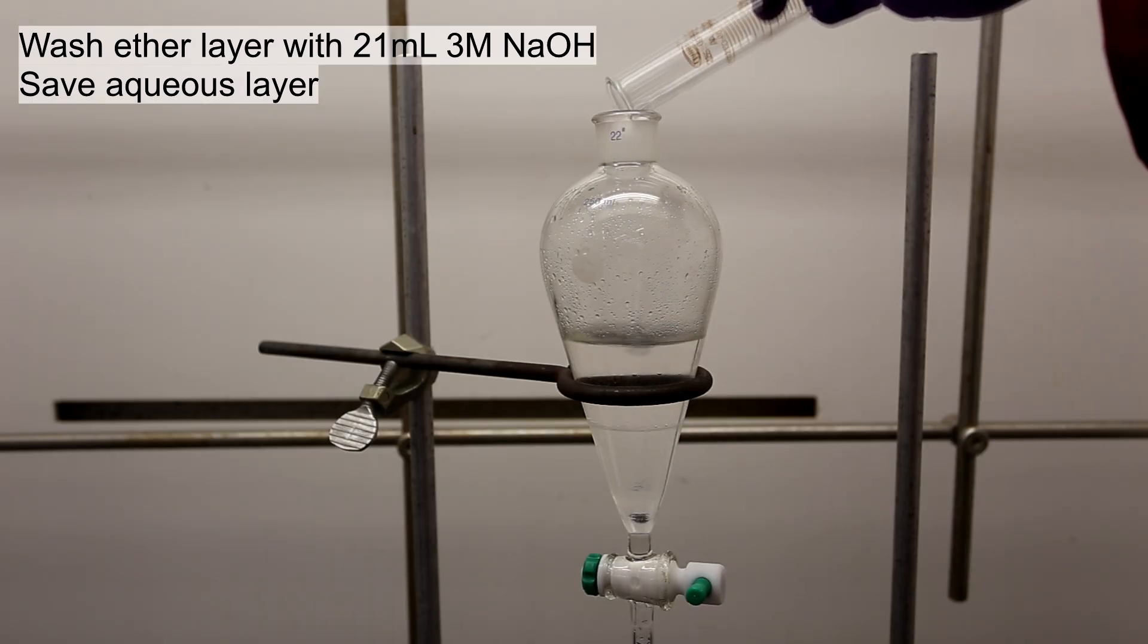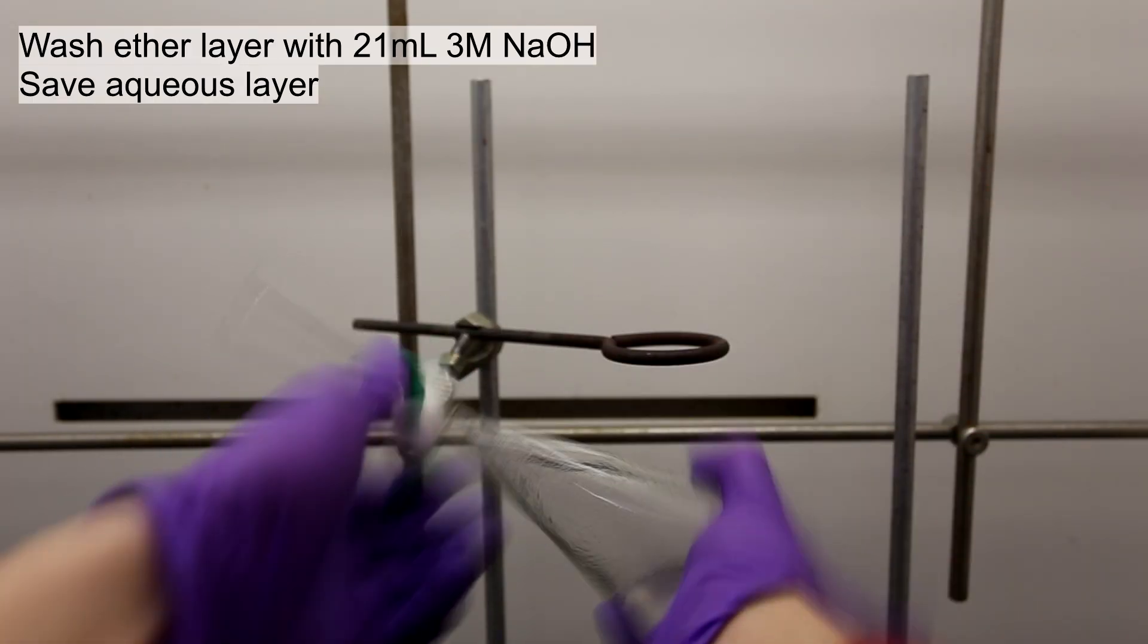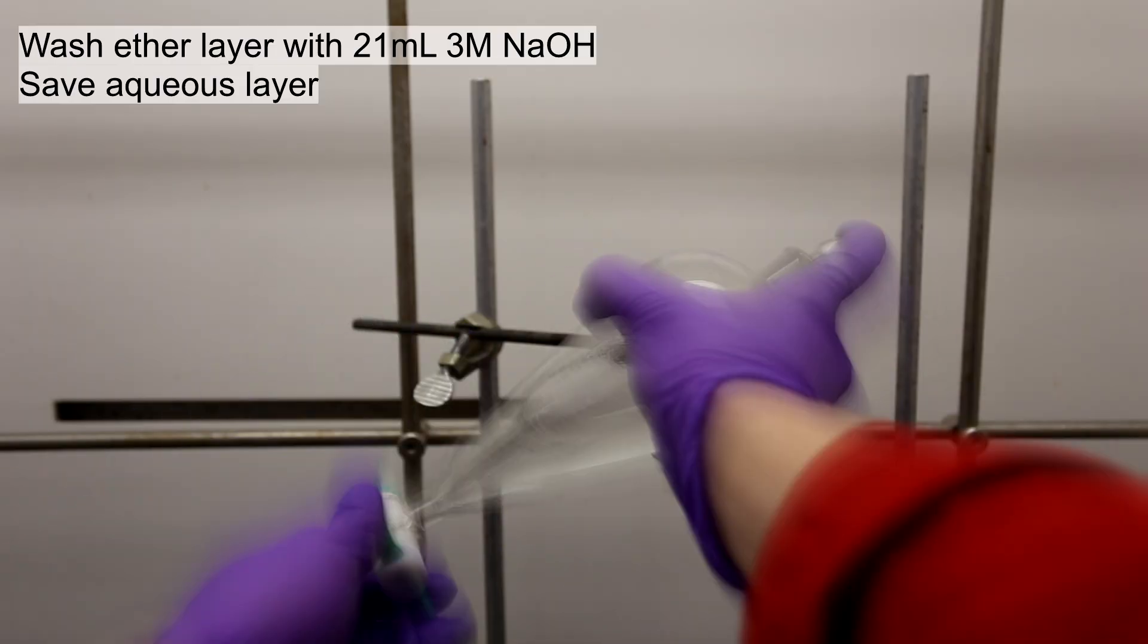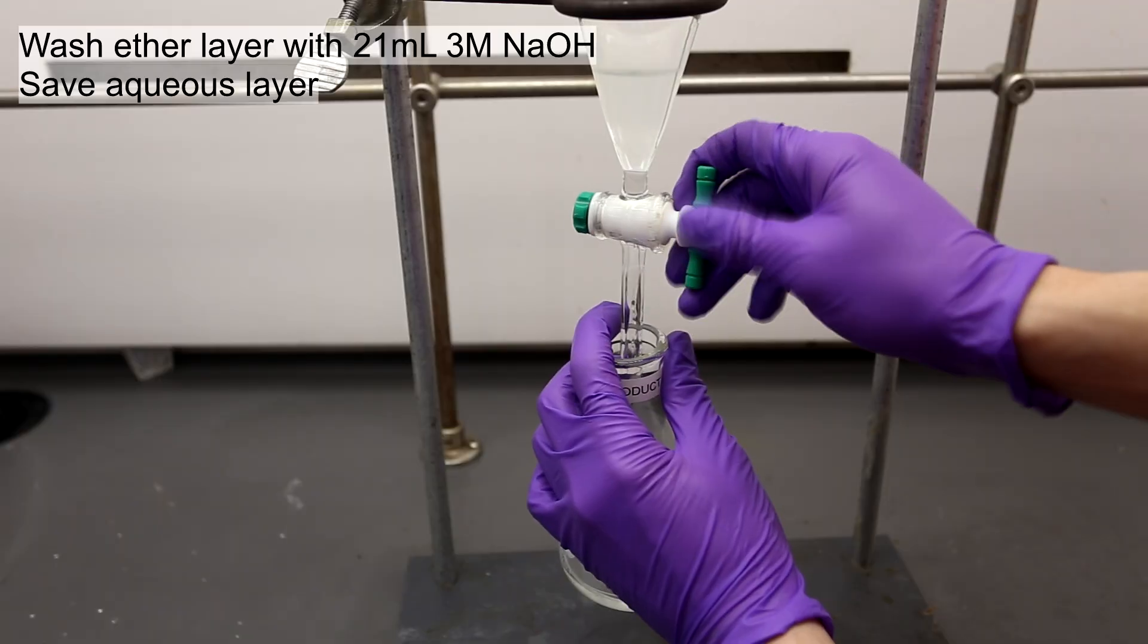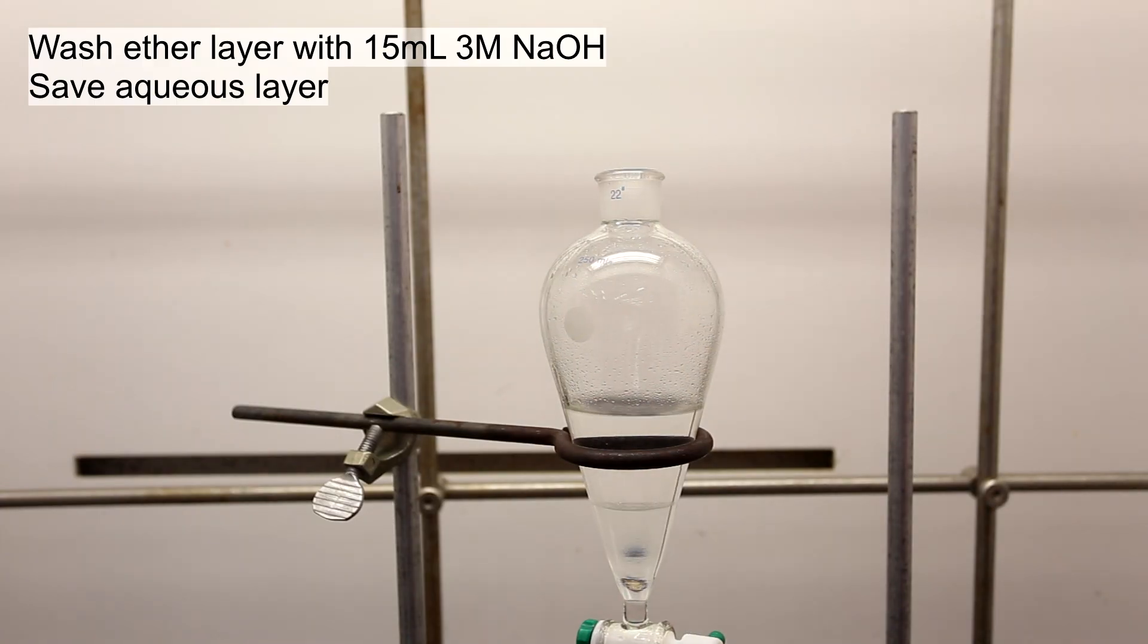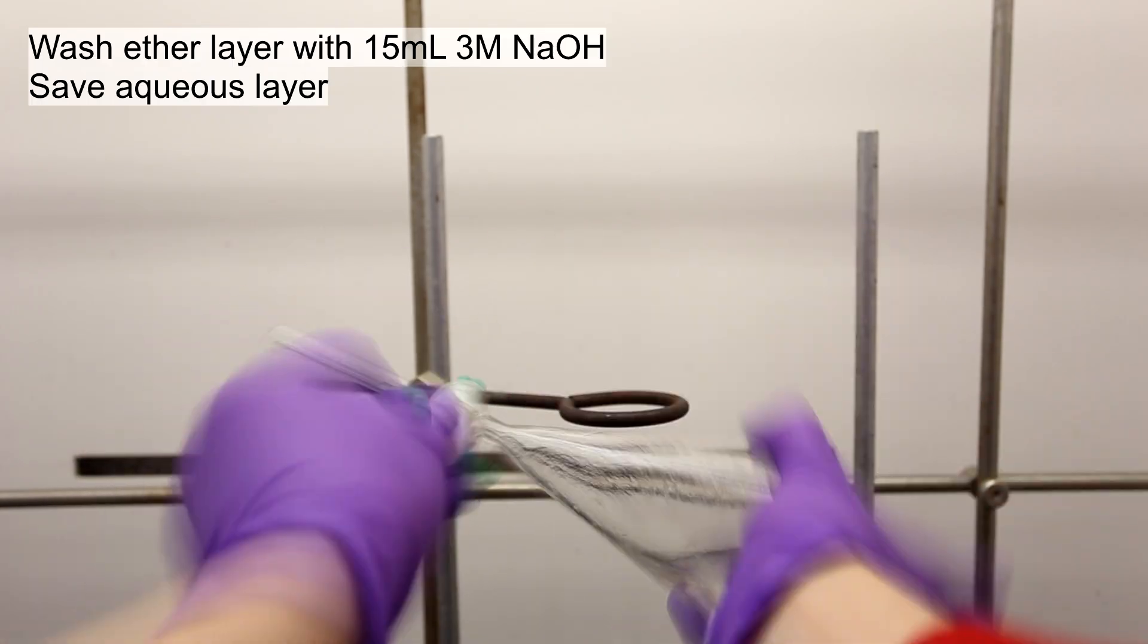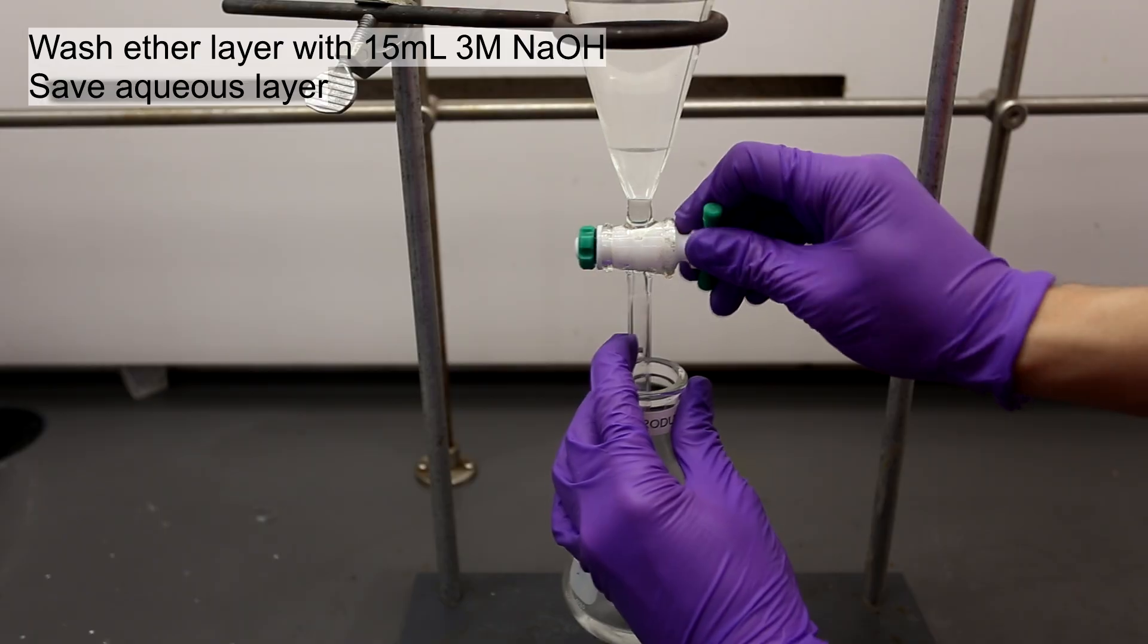Then wash the ether layer with 21 milliliters of 3 molar sodium hydroxide and save the aqueous layer this time. This neutralizes the butyric acid and brings the sodium butyrate into the aqueous layer. Wash the ether layer again with 15 milliliters of 3 molar sodium hydroxide and again save the aqueous layer.